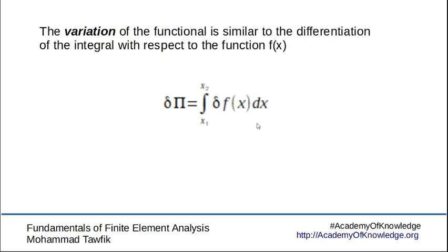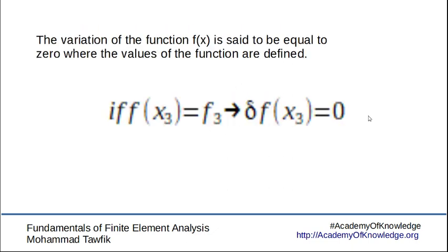Okay, how would that work? We will see. First of all, if f of x is defined at a certain point, if I know that the value of the function is a certain value, f3 for example, then the variation of that function at this point is equal to zero.